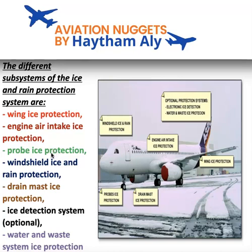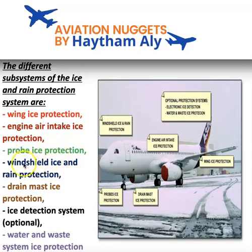The probe heat computer controls heating to each probe — angle of attack, pitot, static, or TAT. Probe ice protection and windshield ice protection come on automatically when at least one engine is running, so they do not need to be manually selected by pilots. They share a single push-button switch called 'probe window heat,' with an AUTO legend, meaning heating activates automatically with at least one engine running.